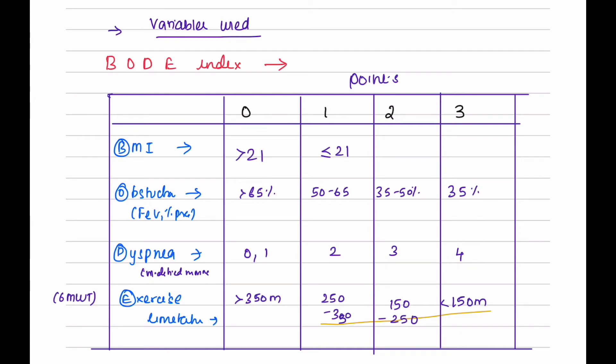Based upon the distance walked in 6 minutes by 6-minute walk test, the score would be 0 if the patient is able to walk more than 350 meters. If the patient walks 250 to 350 meters, the score would be 1. If he walks 150 to 250 meters, the score would be 2. If he walks less than 150 meters, the score would be 3.